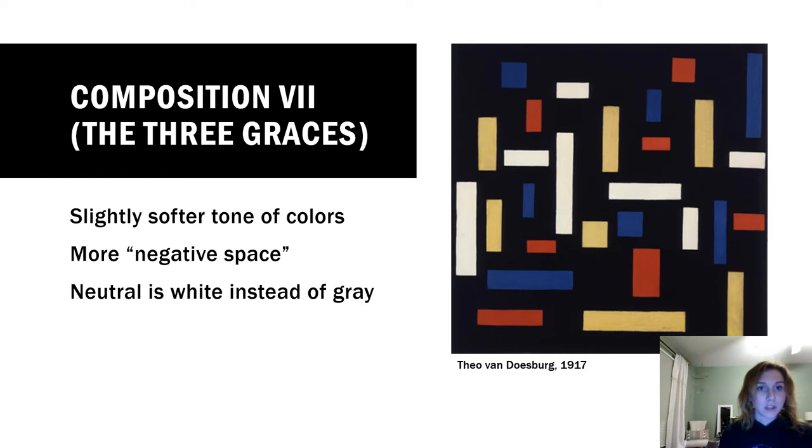Going in a different direction, we have Composition Seven: The Three Graces by Theo van Doesburg, painted in 1917. This painting includes primary colors that are more muted or soft, as well as neutrals that are more off-white rather than gray or stark white. It features linear, slim rectangles rather than squared or wide rectangles. You can tell this piece is very deconstructed from something of a whole.